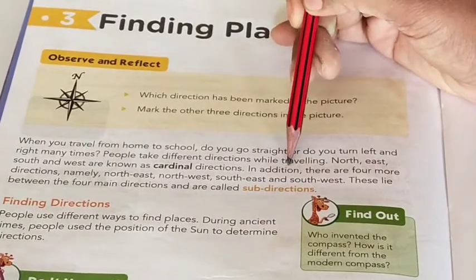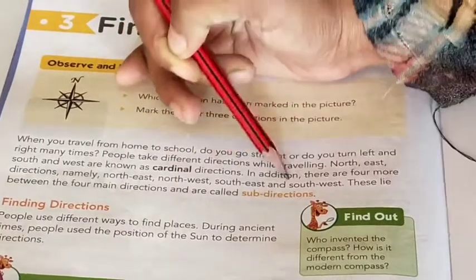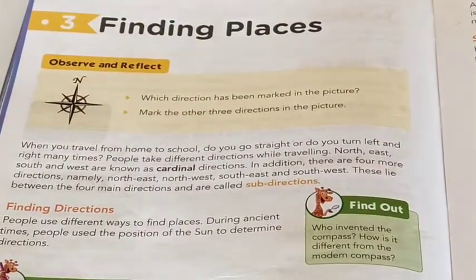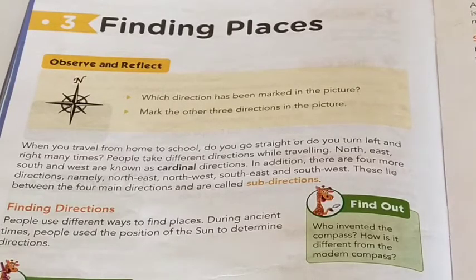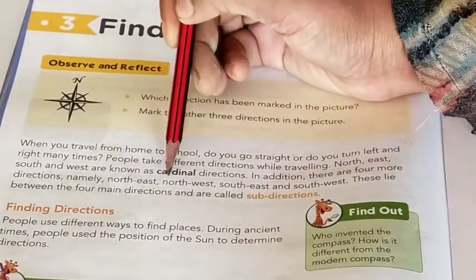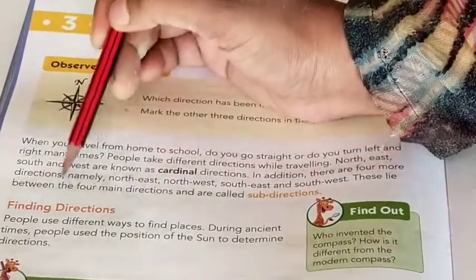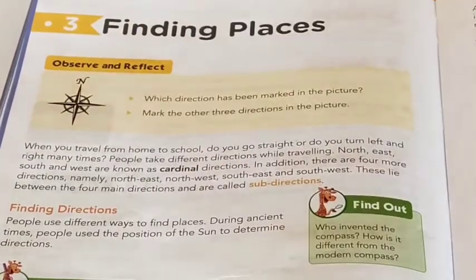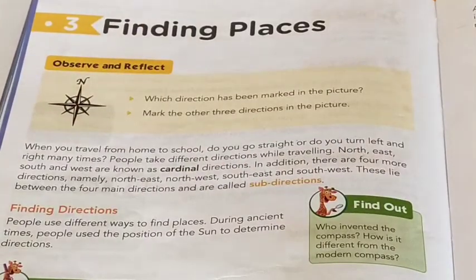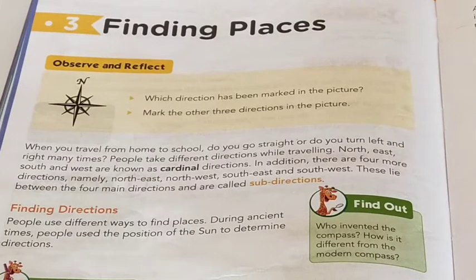In addition, there are four more directions: North-East, North-West, South-East, and South-West. These lie between the four main directions and are called sub-directions. These are the four main directions and the sub-directions between them.